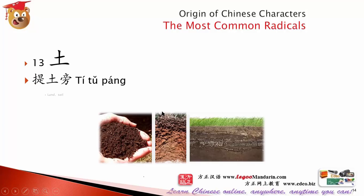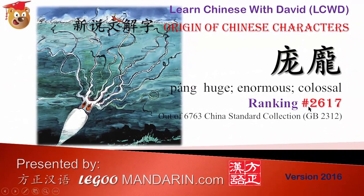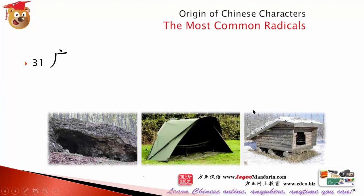土 is soil — land or soil. Normally this one is read flat here, kicked up a little bit. Using 土 as radical, long means something like a shelter — something huge, so huge. Sorry, the pang — it's something like a shelter, like a sheep shelter.